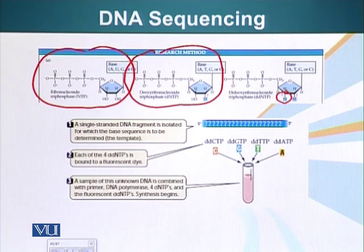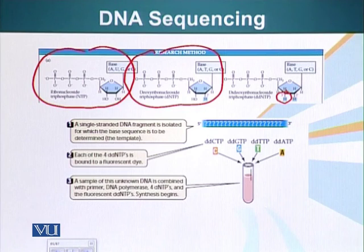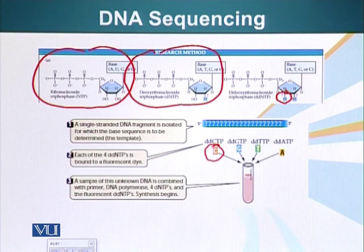Let's see how that is done. We make 4 different types of di-deoxyribonucleosides, one for each base present in the DNA. The special thing about these di-deoxyribonucleosides is that they contain a glowing molecule which is specific to each base. For example, C is red color, G has blue color, T has green color, A has yellow color.